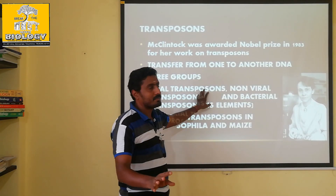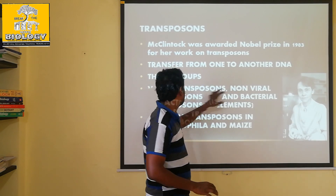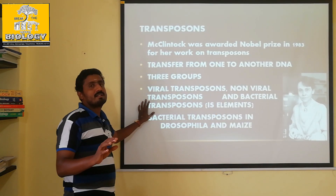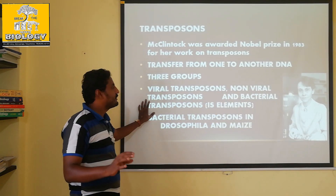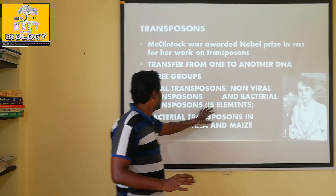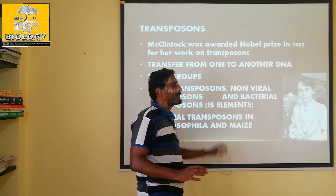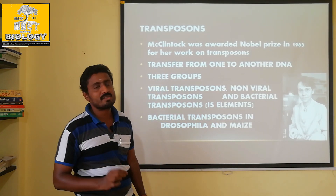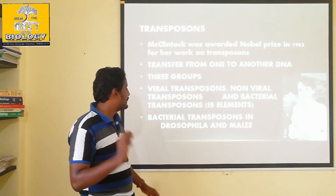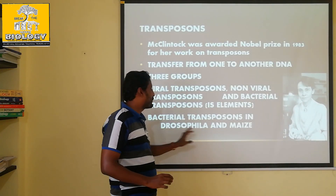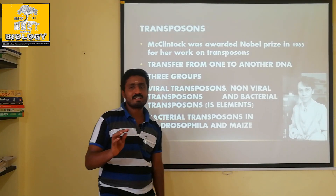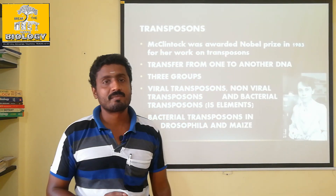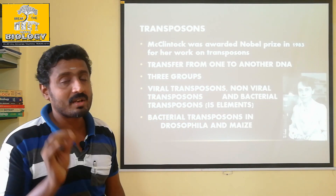Viral transposons and non-viral transposons are distinguished. In bacterial transposons there are two types: IS elements. IS elements are found in Drosophila, maize, and other natural organisms.